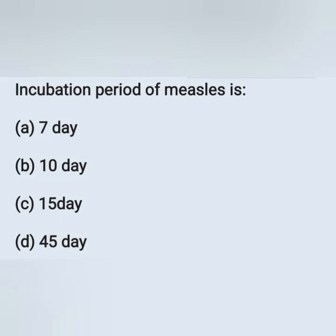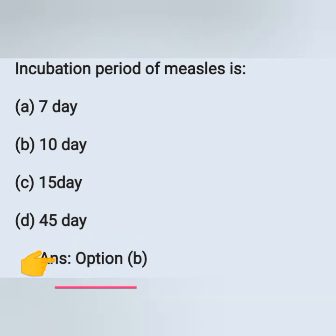Incubation period of measles: Option A — 7 days. Option B — 10 days. Option C — 15 days. Option D — 45 days. Measles is a communicable disease caused by paramyxovirus, a type of RNA virus. The incubation period is 10 to 14 days. So option B, 10 days, is the correct answer.